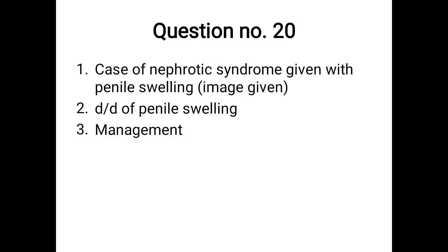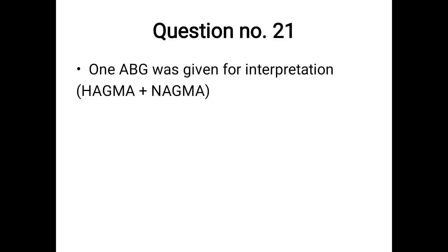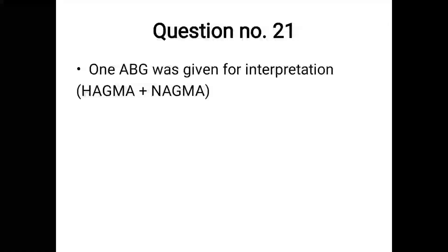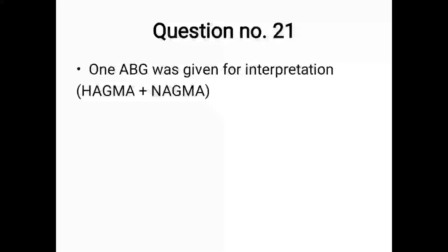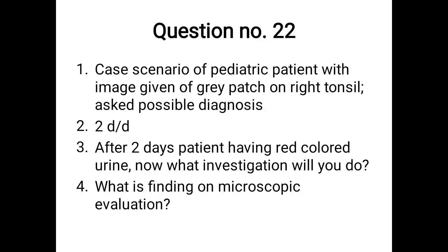Question 21: an ABG was given and asked for interpretation. The interpretation in that case was high anion gap metabolic acidosis (HAGMA) plus normal anion gap metabolic acidosis (NAGMA).